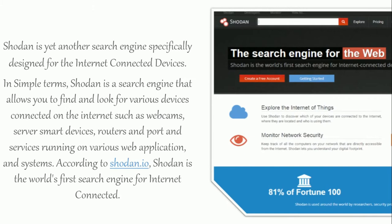Shodan is a search engine specifically designed for internet-connected devices. In simple terms, Shodan allows you to find and look for various devices connected on the internet such as webcams, servers, smart devices, routers, and ports and services running on various web applications and systems. According to Shodan.io, Shodan is the world's first search engine for internet-connected devices.